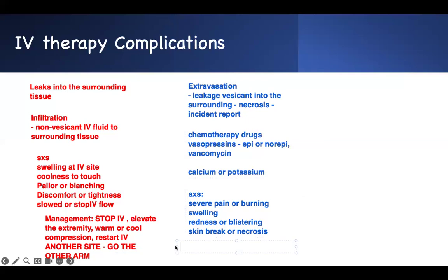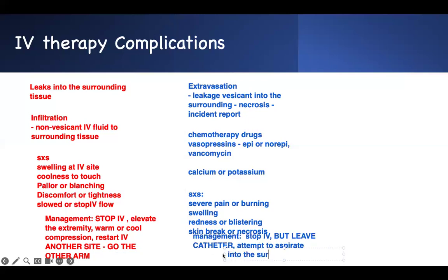What is the management? Don't overthink it. Stop the IV immediately — but the key part is to leave the catheter in place. You leave the catheter because you're going to use it to aspirate all the fluid from the tissue. Attempt to aspirate the fluid that has leaked into the surrounding tissue. Then you give an antidote through the IV — that's why you leave it in place. The most common antidote is a vasodilator like phentolamine.